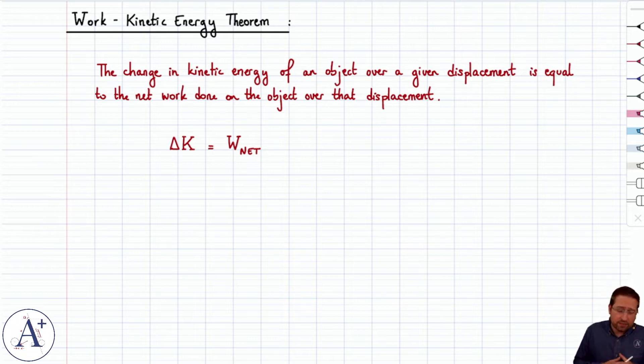So what does it say? It says that the change of kinetic energy of an object or a system over a given displacement is equal to the network done on the object or the system over that displacement. And that's typically written delta k equals work net.